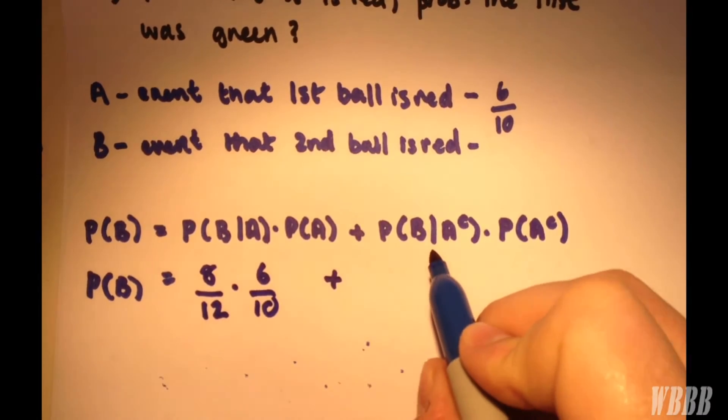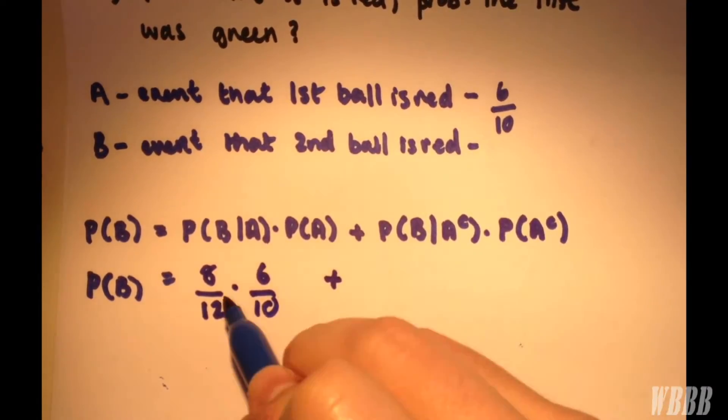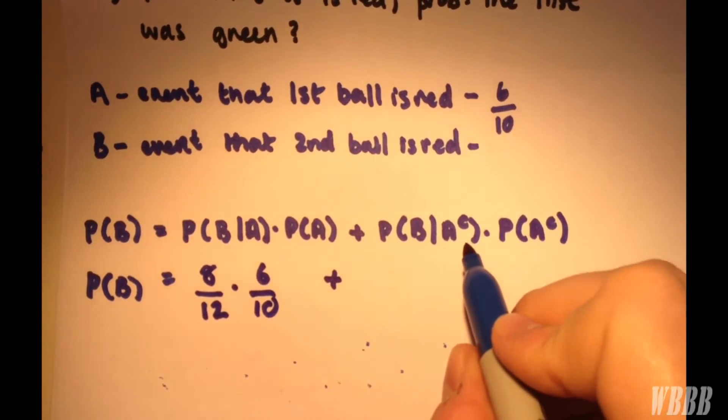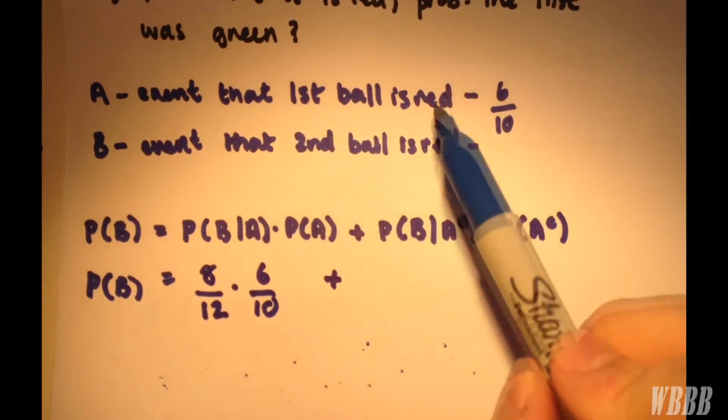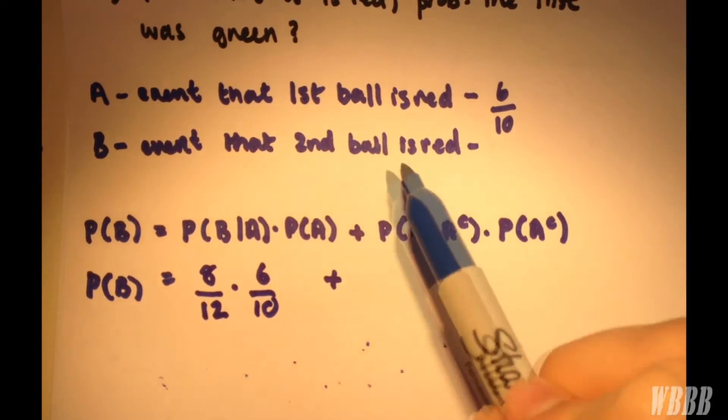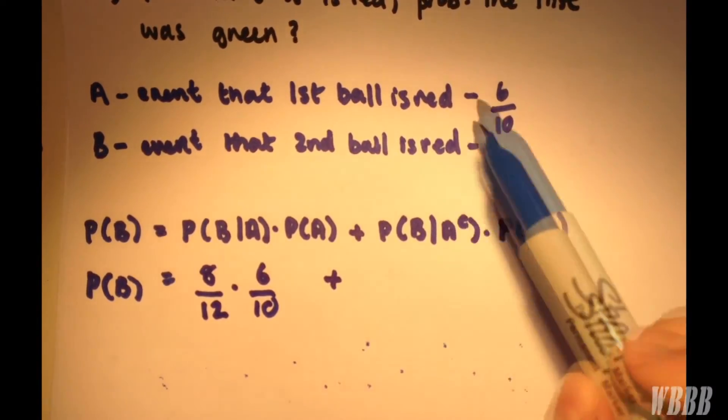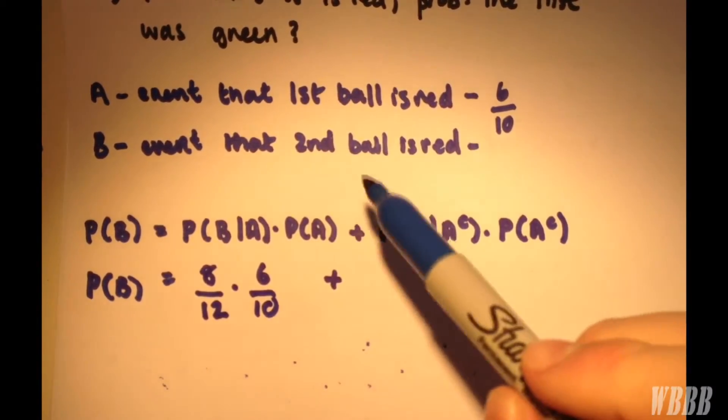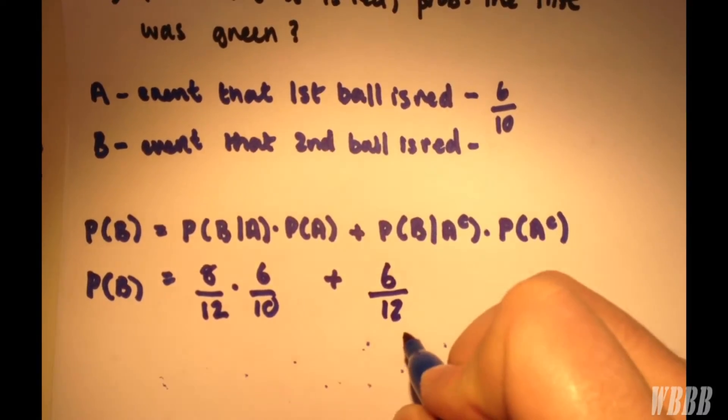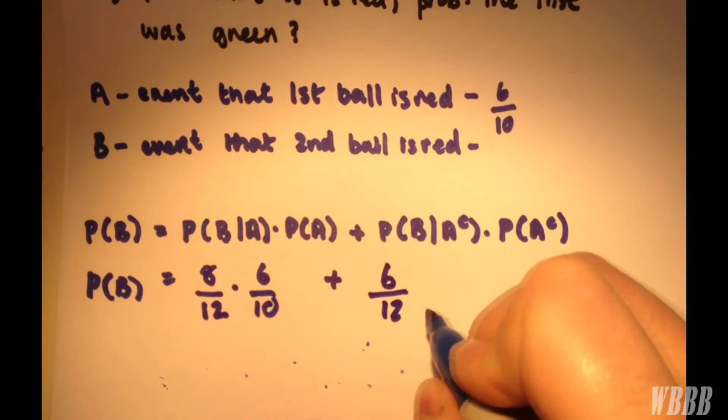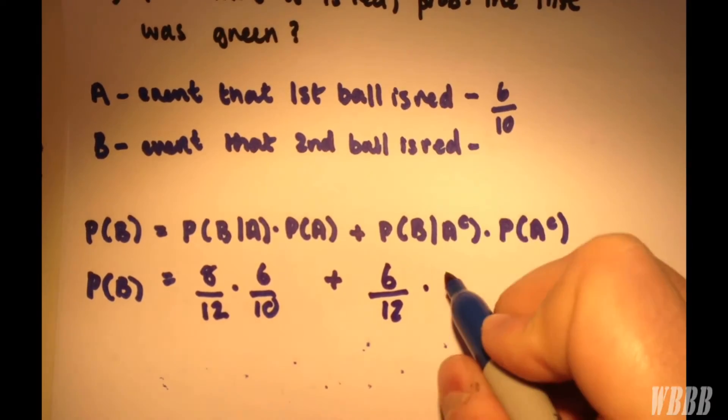Now P(B|not A) uses a similar method. We have 4/10 because we're choosing a green ball first. That green ball is replaced along with two more green balls, so that becomes 6/12. But we don't want to choose a green ball—we want to choose a red ball. So it's the other 6 out of 12 that are left. That's multiplied by the probability of not red, which is green, which is 4/10.